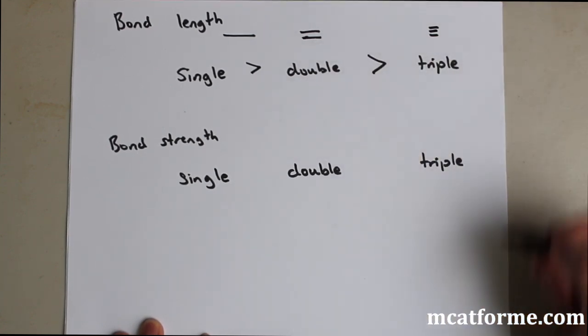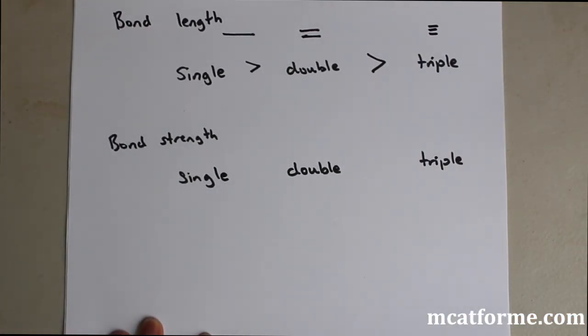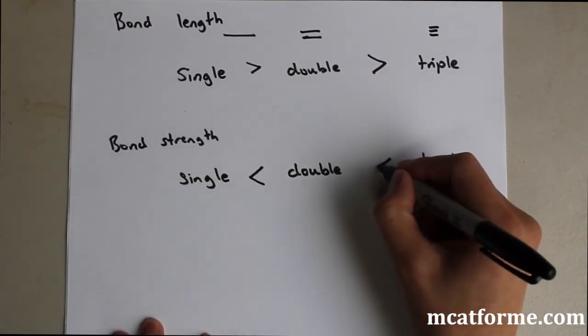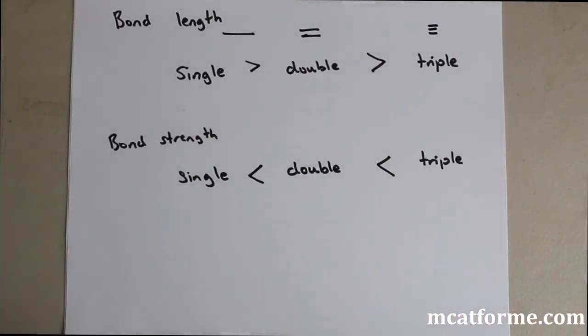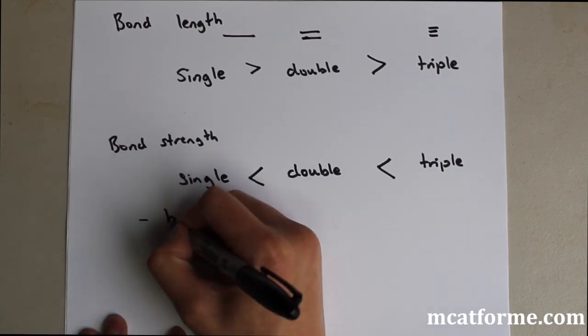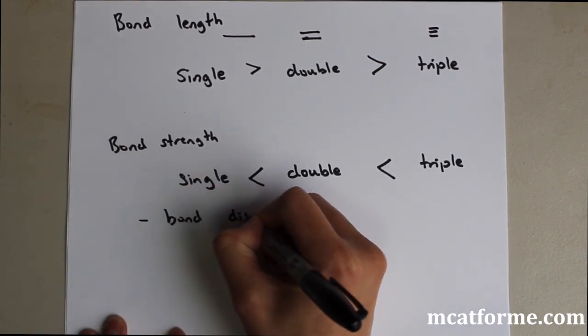But bond strength is the exact opposite. And that should make sense. A triple bond should be the strongest and the hardest to break. And how do we measure this? It's by bond dissociation energy.